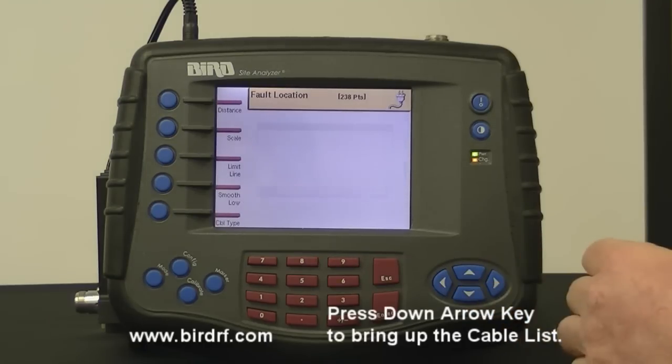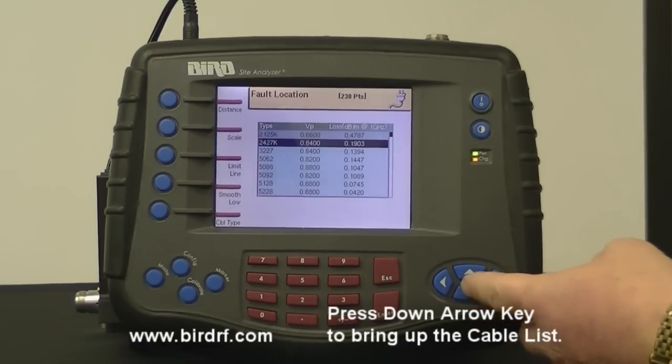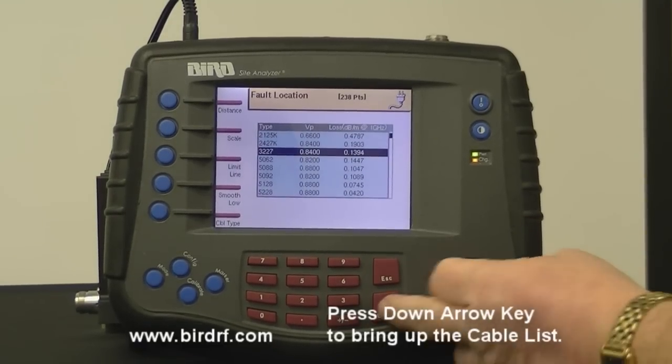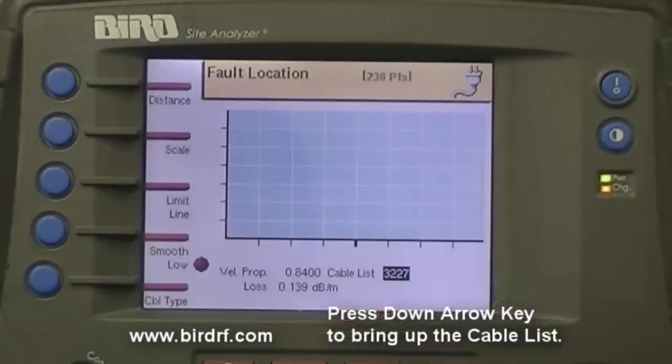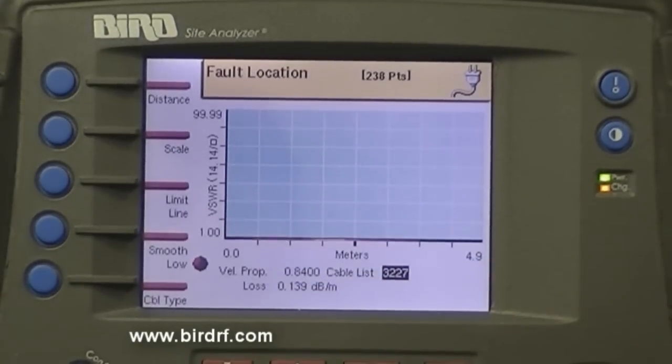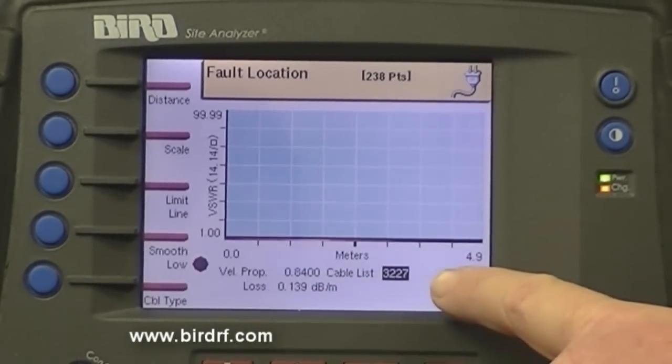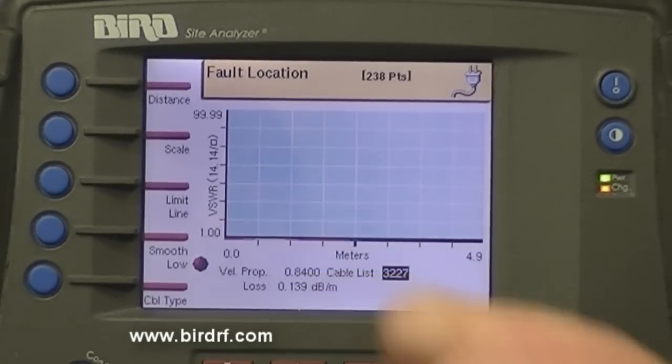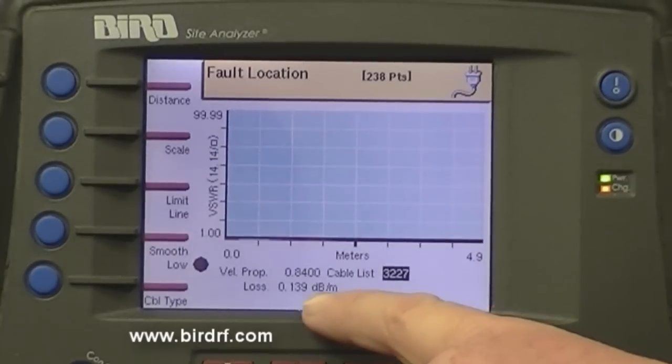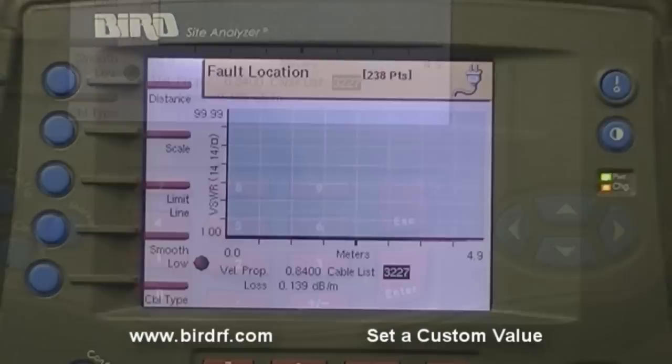Pressing the down arrow keys comes up with a list and if I select one of them, it gives me the cable that I've selected and also the velocity of propagation and the cable loss.